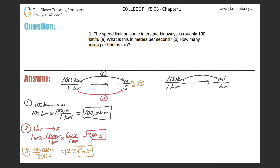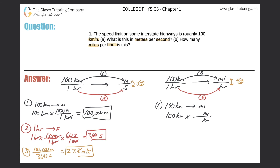Step one: convert kilometers into miles. Step two: take the hours and convert them into hours — that should be a real challenge. Step three: take miles and divide by the number of hours. For part one, we have 100 kilometers and we write kilometers on the bottom. I know the relationship between kilometers and miles: approximately 1.61 kilometers per one mile. Taking out the calculator: 100 divided by 1.61 works out to approximately 62.1 miles.